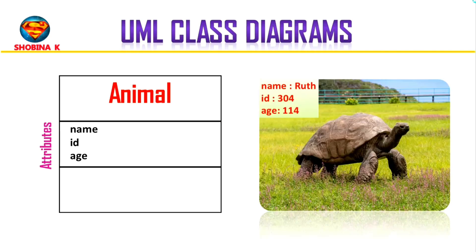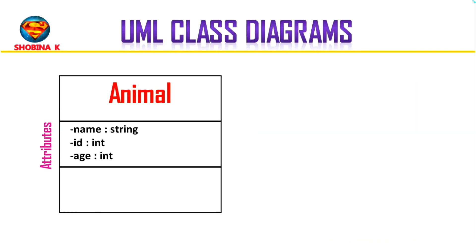For example, Ruth, id number 304, age 114. These attributes need to be formatted in a certain way. We add the visibility, which we'll talk about later. The name of the attribute begins with a lowercase letter, followed by a colon and data type. The name we want to return as a string, and we format the other attributes in the same way, except we return an integer since those are numbers.